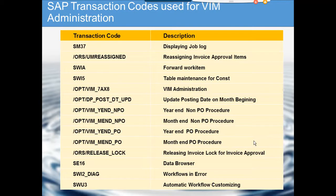We are going to cover the transaction codes used for VIM administration. The first important transaction code is SM37. This is a standard SAP transaction code — not specific to OpenText VIM — that helps you monitor background jobs. There are a bunch of background jobs that need to run for VIM to work properly.